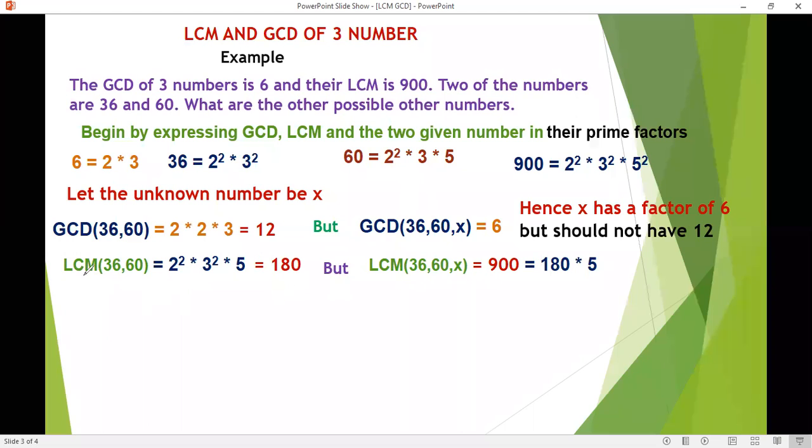The LCM of the two numbers, 36 and 60 was 180. But when we bring in the third number, the LCM rises all the way to 900. Essentially, this means that our x is introducing an extra 5. Remember we have one 5 here.